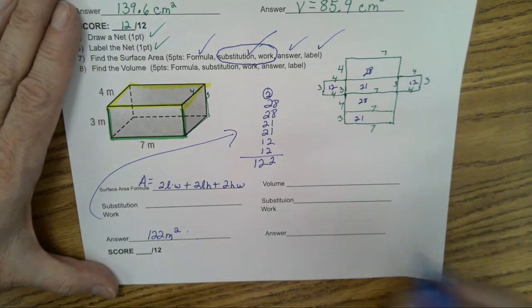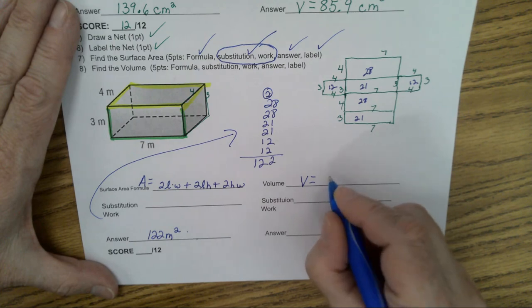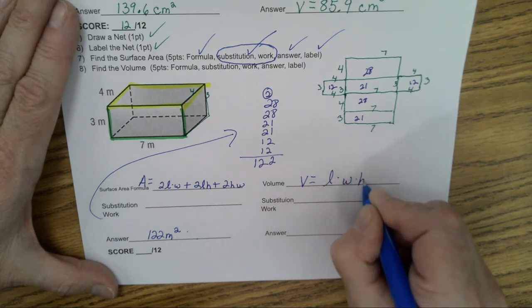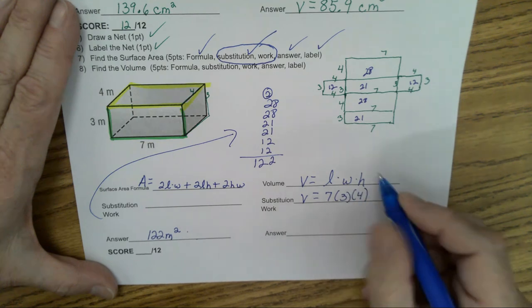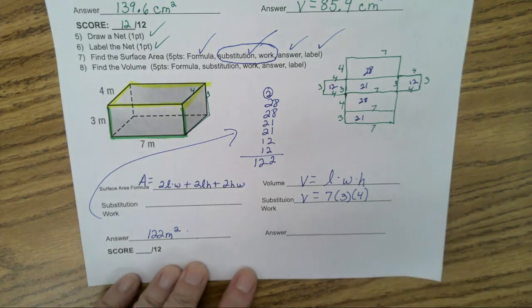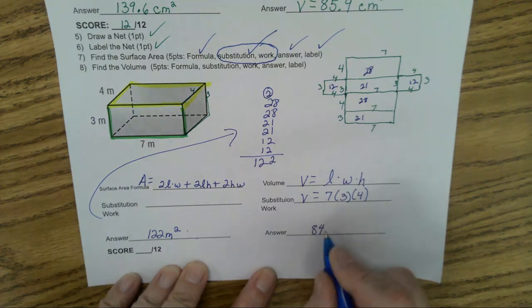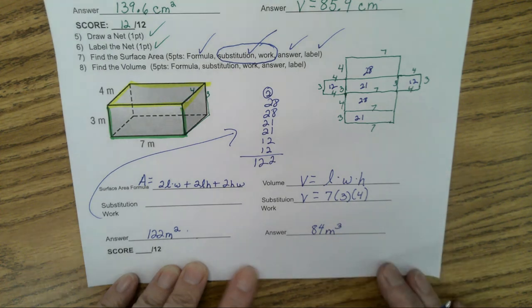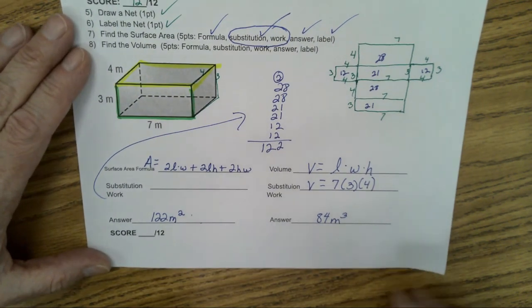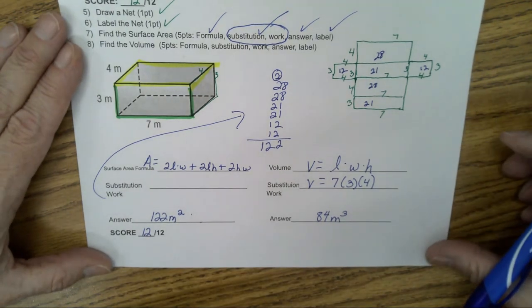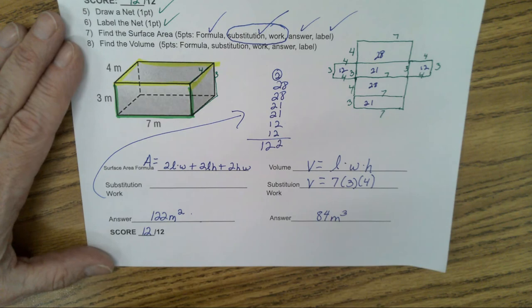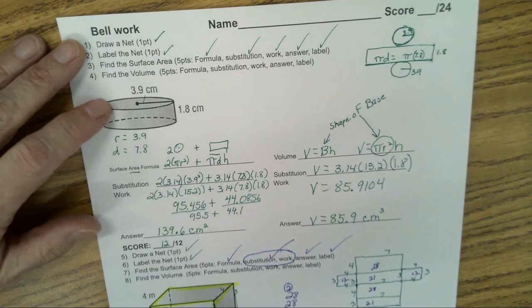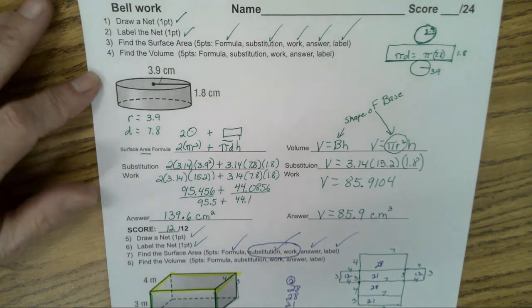Now, the formula for the volume. Volume for a rectangular prism is length times width times height. So we have 7 times 3 times 4 or 7 times 4 times 3. That'll give you the same thing. And you get 84. Now, this is 84 meters what? Cubed because it is volume. Any questions on this? And that's another 12 out of 12.